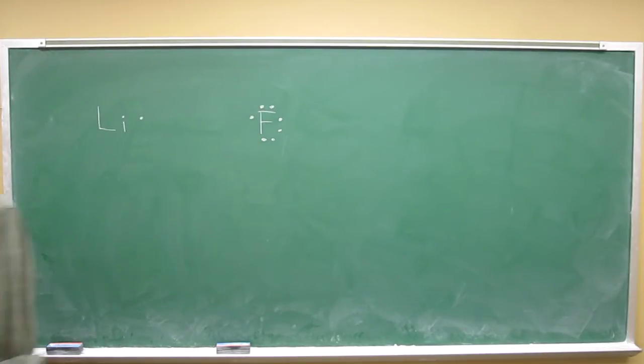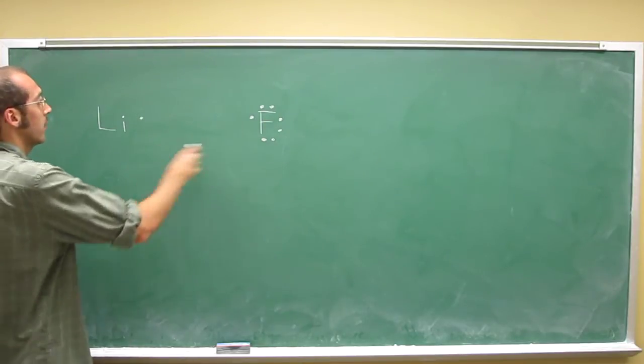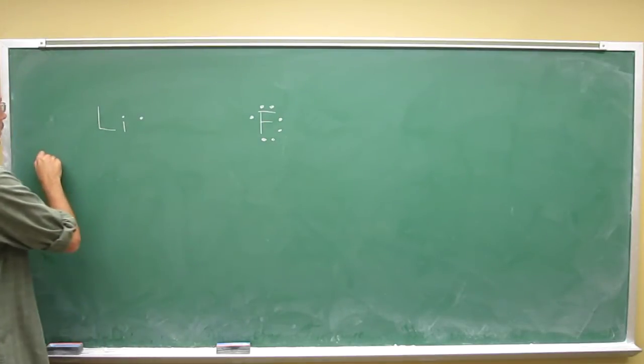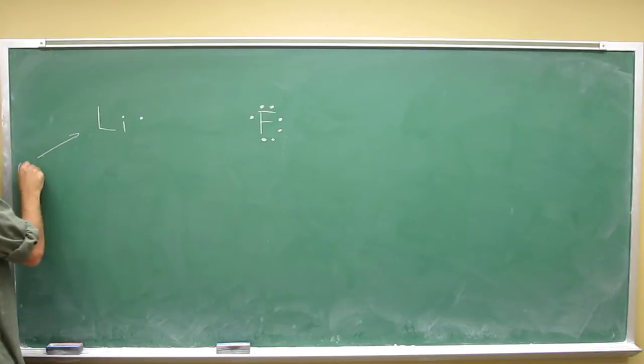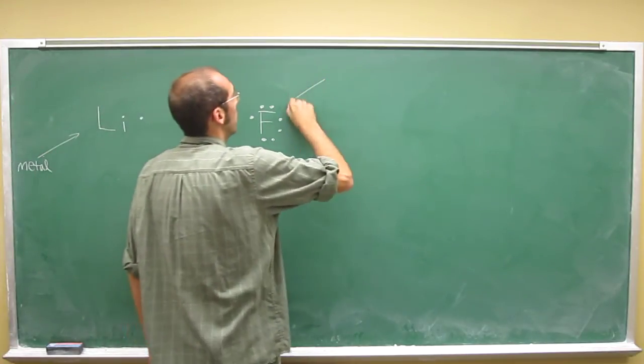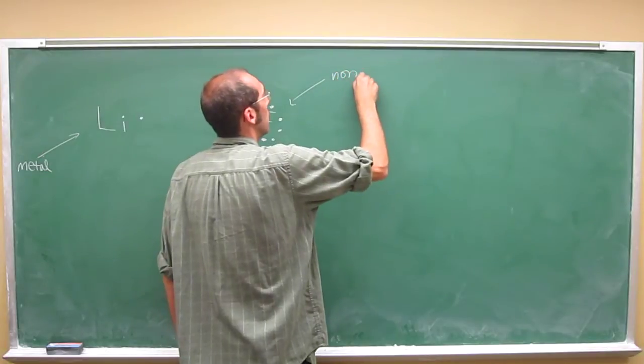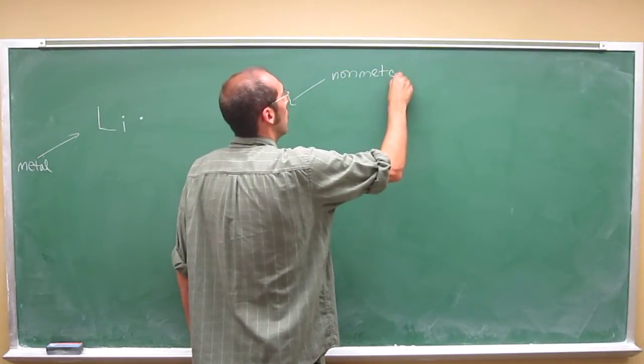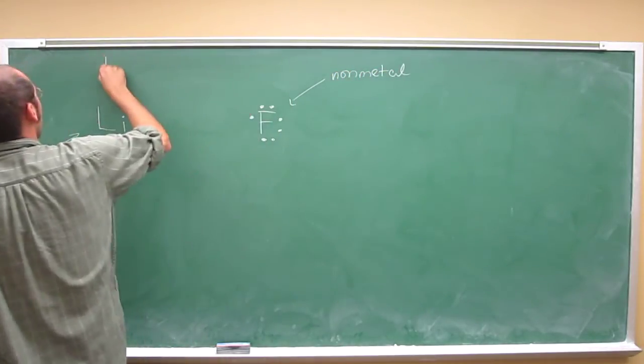But anyway, so what we need to do is, in this case, because lithium is a metal and fluorine is a non-metal, we're going to make an ionic bond here.